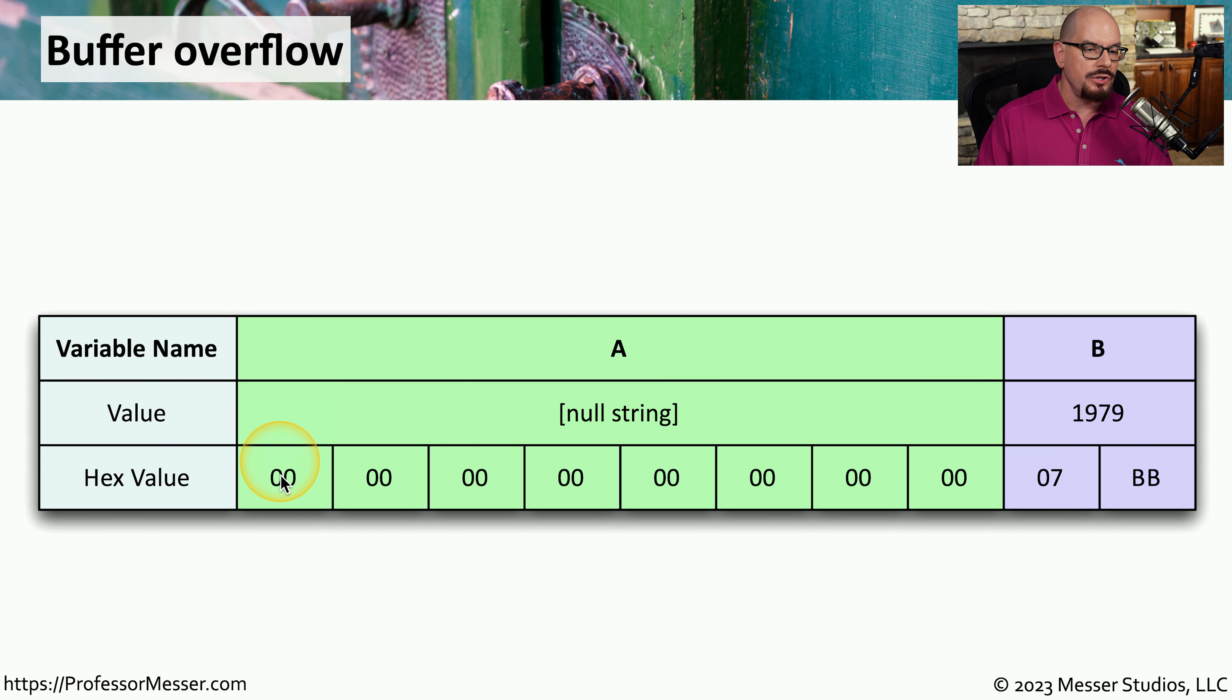The attacker knows that they can use nine bytes into variable A. And that will fill up the eight bytes of what normally would be variable A. And it will overflow that last byte into variable B.